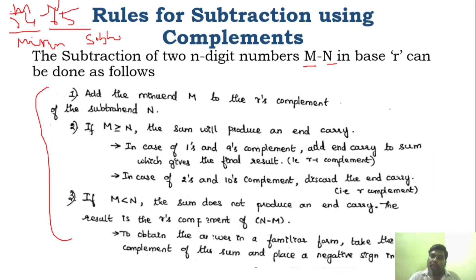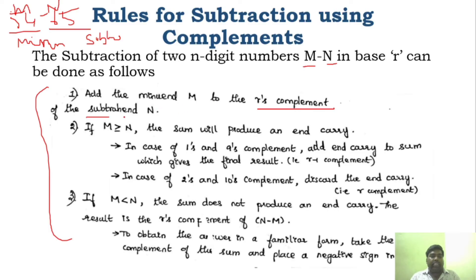So the first step: for any question, irrespective of the complement type, what you have to do is find out the R's complement of the subtrahend. That is, find the R's complement of N — in this case, 65.